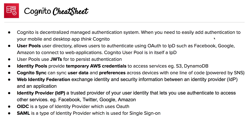Let's talk about user pools. The user pool is the user directory — it allows users to authenticate using OAuth to identity providers (IPDs), such as Facebook, Google, and Amazon, to connect to your web applications. A Cognito user pool isn't in itself an IPD, but it can be on that list as well. User pools use JWTs to persist authentication.